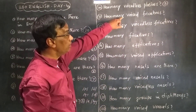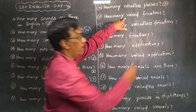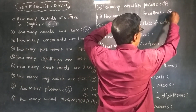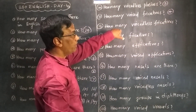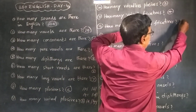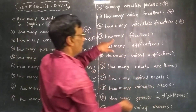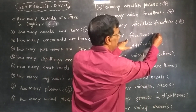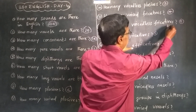How many voiceless fricatives? There are 4 voiceless fricatives. How many voiceless? There are 5. How many voiceless? There are 9.